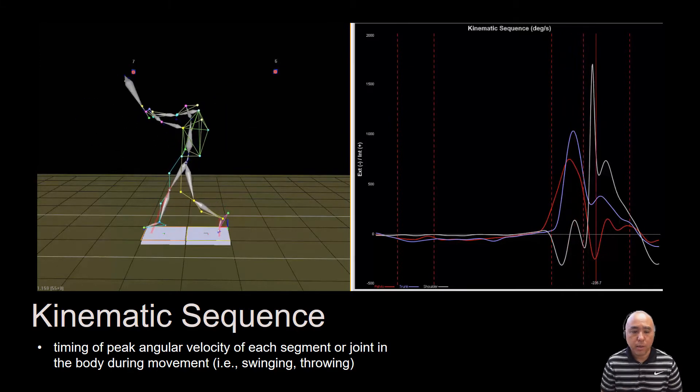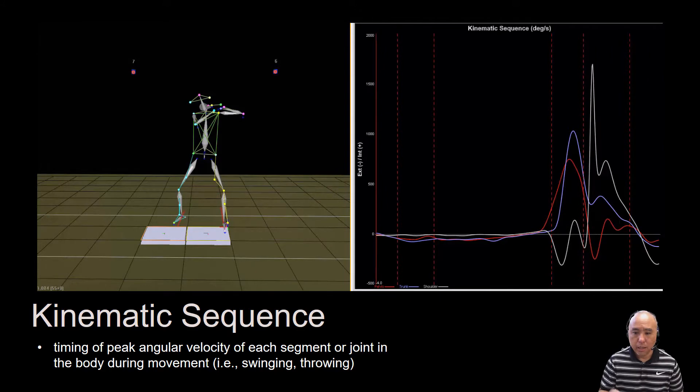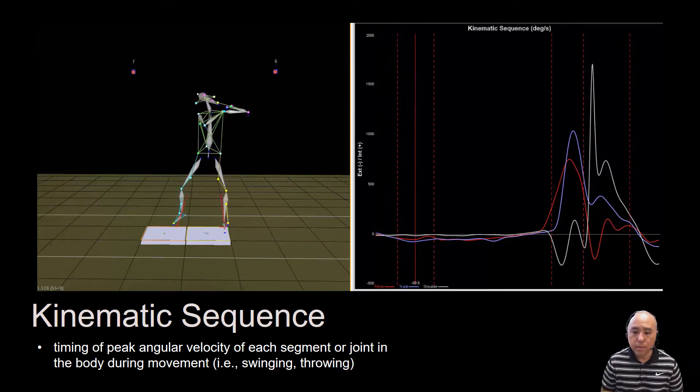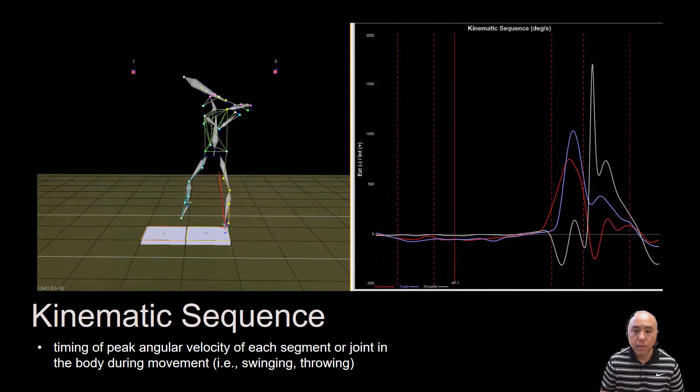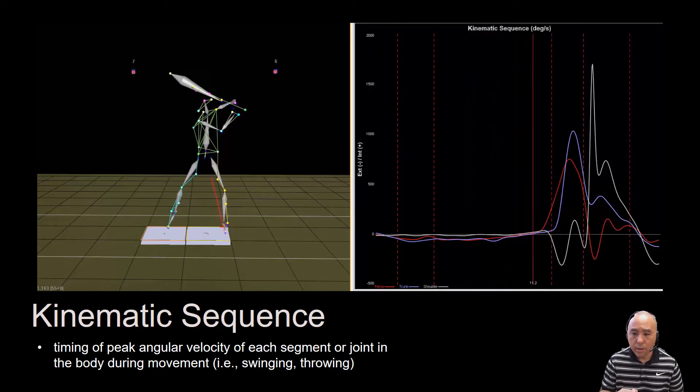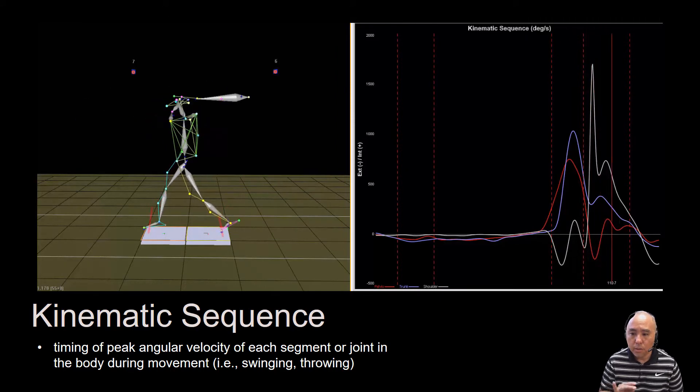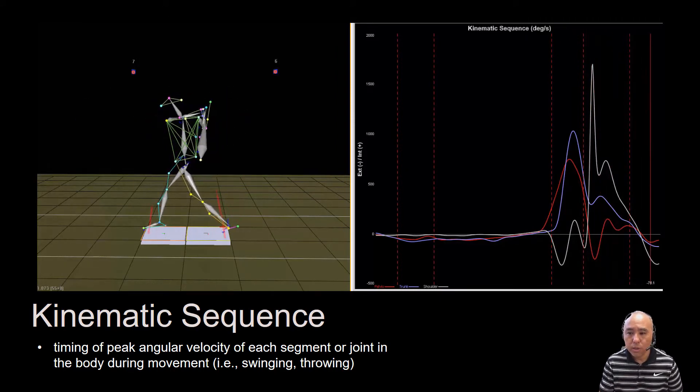Take for example this baseball player. He is hitting a baseball off a tee, and the graph here on the right represents the angular velocities of the pelvis, trunk, and shoulder. Right now don't focus too much on the magnitude of angular velocity, but I want you to concentrate on the timing in which each one of these peaks occur.